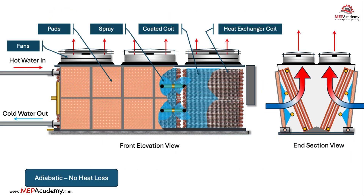Adiabatic fluid coolers or condensers operate like dry cooling systems, except they have water running over pre-cooling pads. As air is drawn through the pads, the ambient dry bulb temperature of the incoming air is depressed. This reduced dry bulb temperature provides for greater system heat rejection than any dry system.